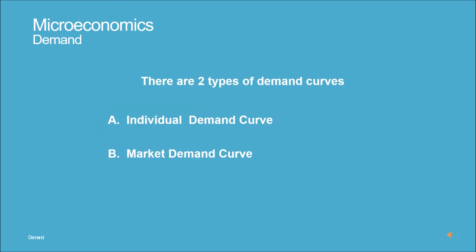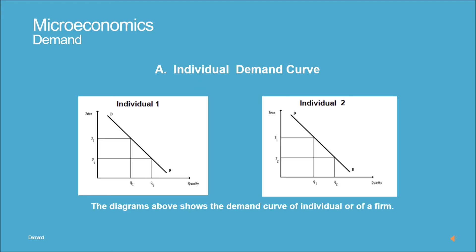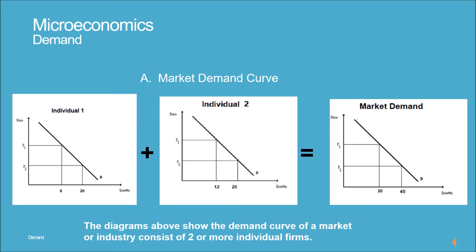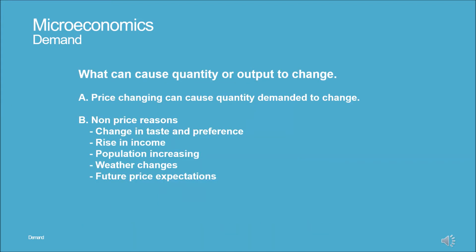There are two types of demand curves: A) the individual demand curve, and B) the market demand curve. The individual demand curve shows the demand of an individual or a firm. The market demand curve represents everybody, or all firms, buying and selling in the market for a good.